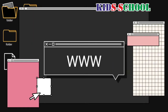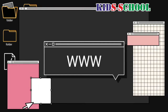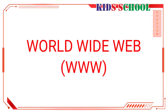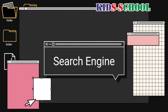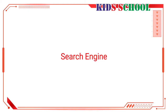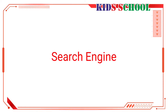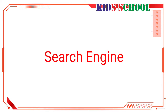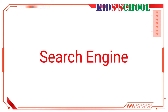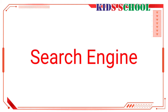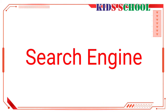World Wide Web, or WWW, is a collection of all websites on the internet. The third term is search engine — it is a site on the internet with the help of which a user can search for other websites. A user can search the web on the basis of keywords. Google is one of the most popular search engines.